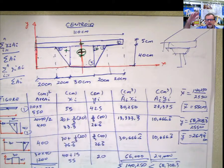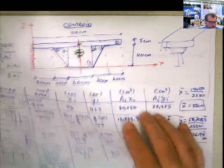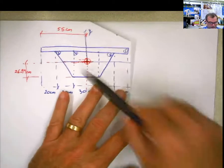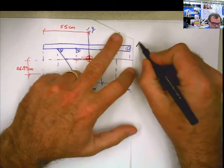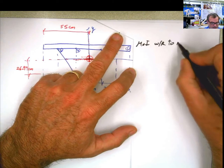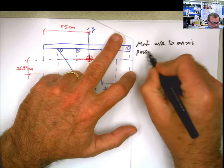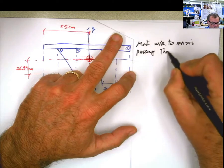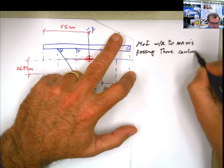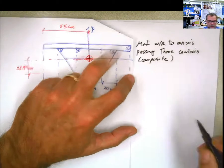You have seen all those overpasses that they build in the highways. This is a fairly common type of structure, a fairly common type of section. So now we're going to work with the same one, but we're going to calculate the moment of inertia with respect to an axis that passes through the centroid of the composite figure. That's what we're going to do.